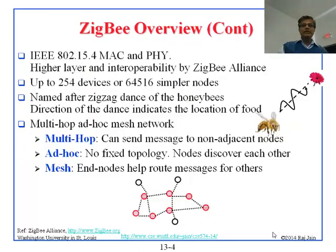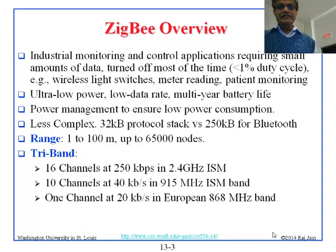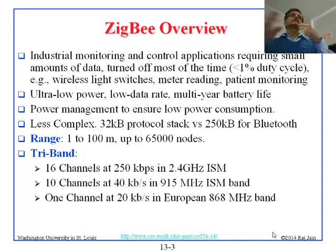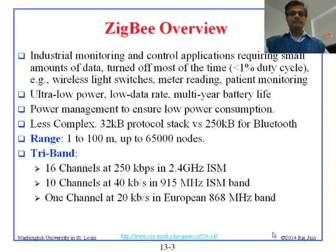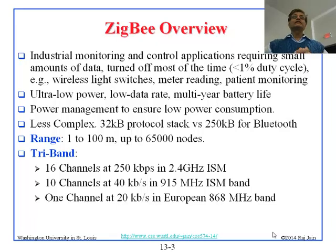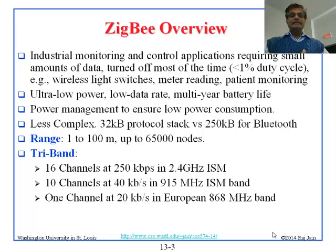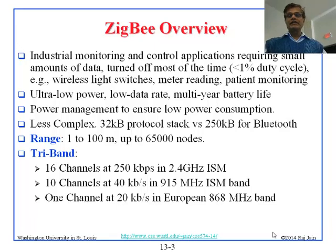Zigbee is designed for industrial automation originally. Basically, it was the sensor network protocol. This is for those applications which are mostly off — the duty cycle is less than 1% — such things as remote controls, light switches, meter reading, patient monitoring, and so on.